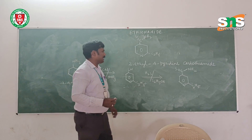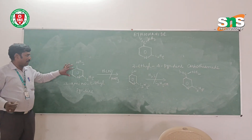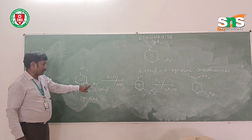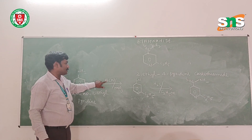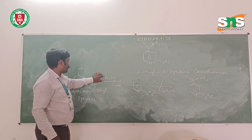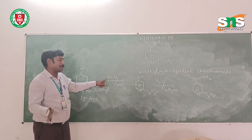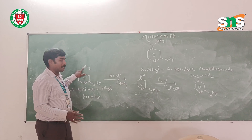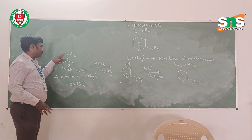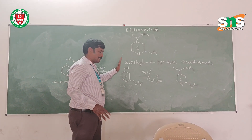To summarize the synthesis: the starting material is 4-amino-2-ethylpyridine, where the amino group is at the 4th position and the ethyl group is at the 2nd position. Treatment with HCN in the presence of nitric acid causes the amino group to be eliminated as ammonia, and the CN group replaces it. So 4-amino-2-ethylpyridine is completely converted to 4-cyano-2-ethylpyridine.